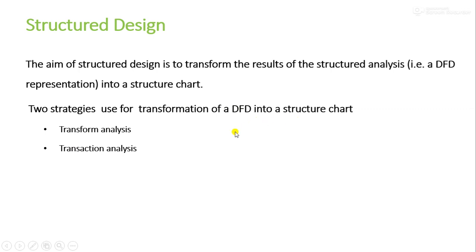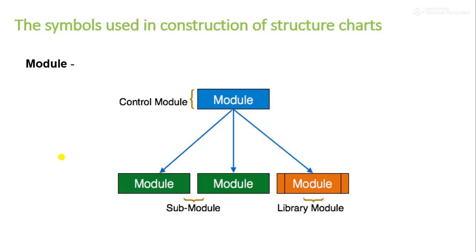In our upcoming videos we are going to discuss transform analysis and transaction analysis in detail. But in this video we are going to discuss what exactly a structure chart is and what are the different types of symbols that we can use to draw a structure chart. The main aim of a structure chart is to represent the different modules of a system and the data and control flow between modules.